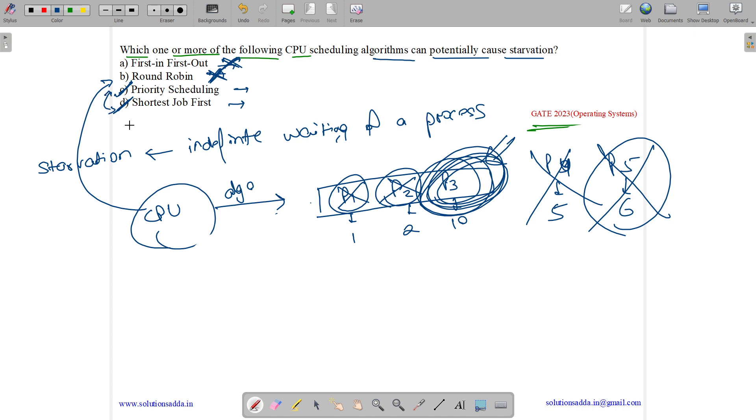So answer is option C and D - both will suffer from starvation: priority scheduling and shortest job first.